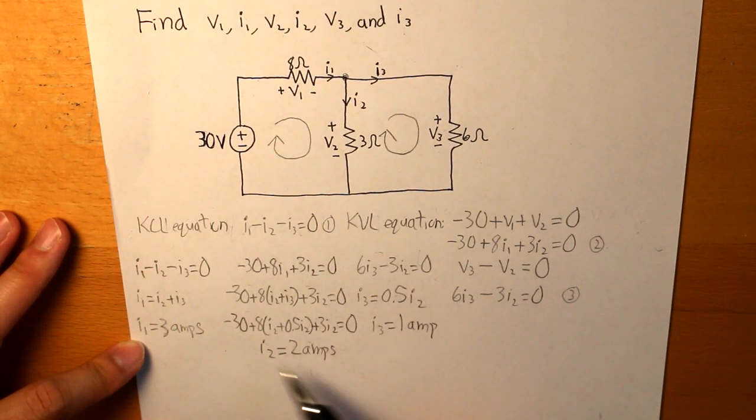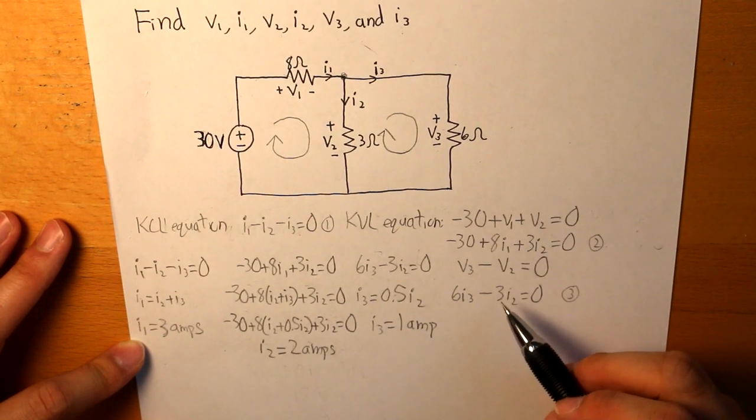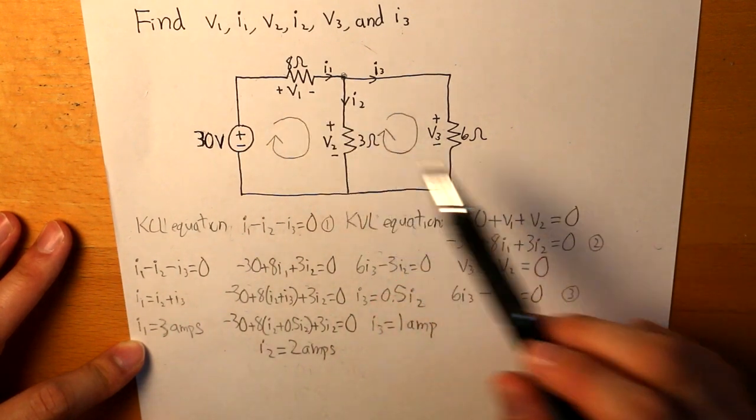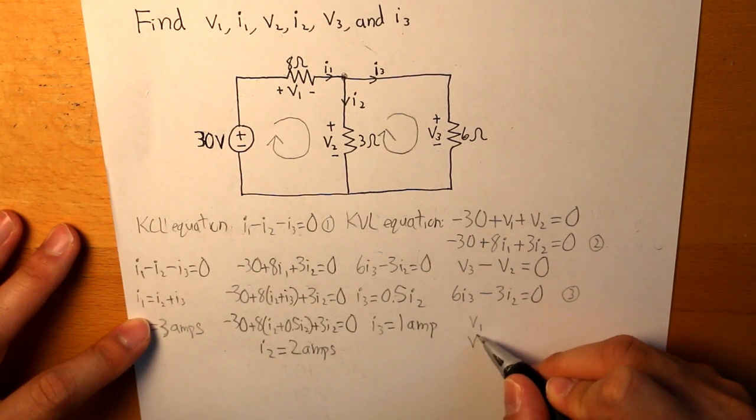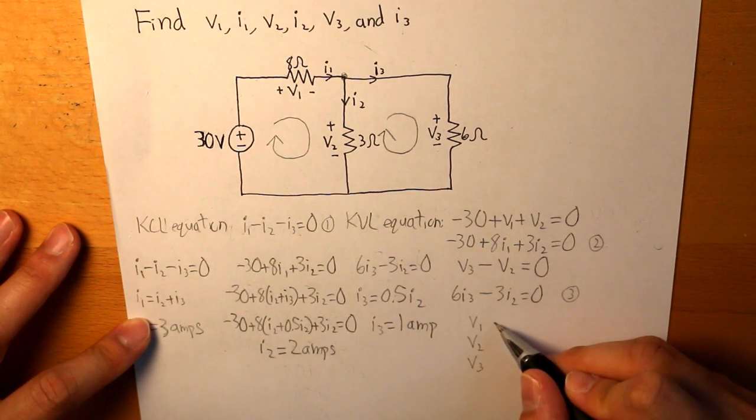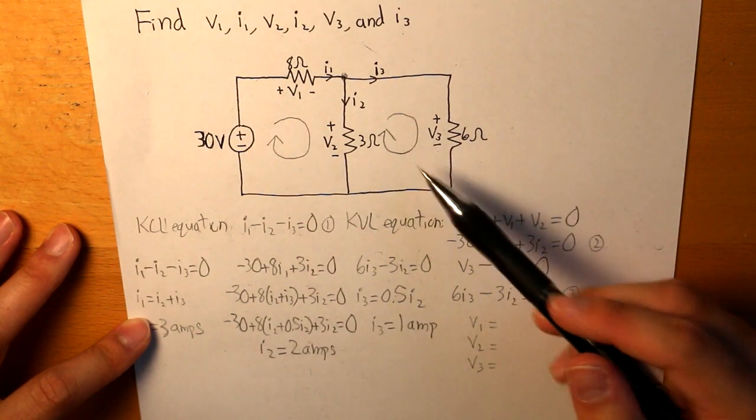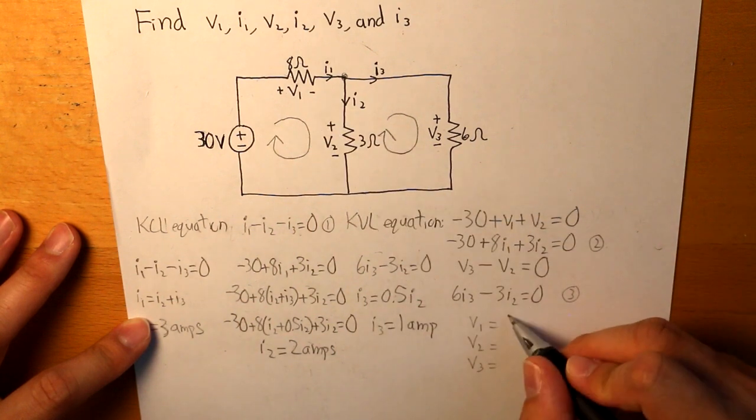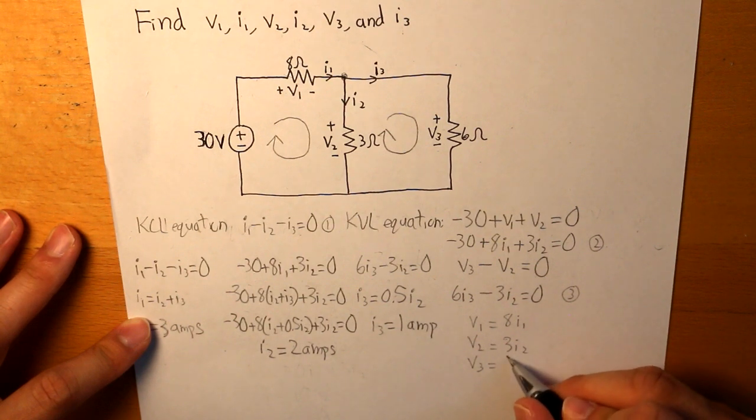Now we're given what each current are. Now we're going to have to find what the voltages V1, V2, and V3 are. And what we do know is that we already determined what the Ohm's Law picture is. So V1 is equal to 8I1, V2 is equal to 3I2, and V3 is equal to 6I3.